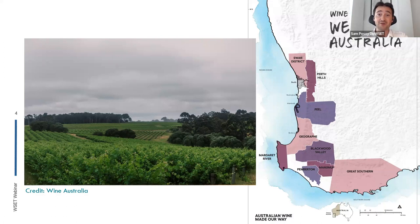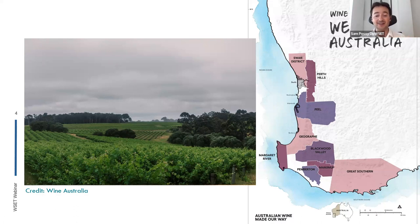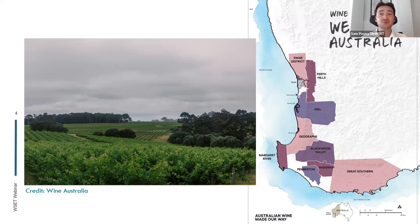Dr Cullity was soon followed by Dr Kevin Cullen, who founded Cullen Estate, and Dr Bill Pannell, who founded Mosswood — a trio of early pioneers all from the medical profession. The other fascinating thing about Margaret River is that alongside wine, it is famous for surfing. The two industries live in symbiosis: many young people looking for work when they're not surfing are ideal for vineyard jobs like harvesting grapes, pruning vines, and working in tasting rooms. Lewin Estate is another prominent producer in the region.